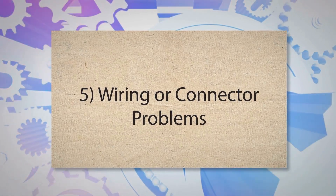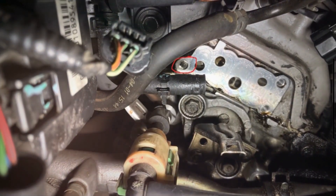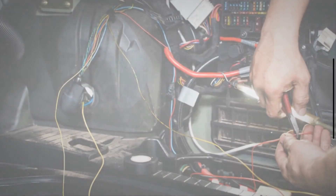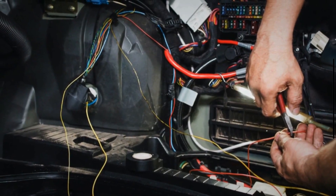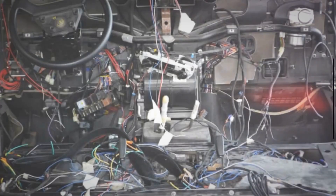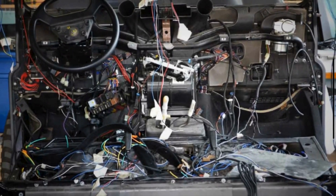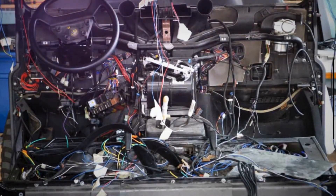Cause 5: Wiring or connector problems. The VVT system and its components rely on electrical signals to operate correctly. Damaged wiring or loose connectors can cause intermittent or failed communication between the sensors, solenoids, and the ECU. This miscommunication can lead to incorrect adjustments of the camshaft timing, causing it to advance too far and trigger the P0021 code.